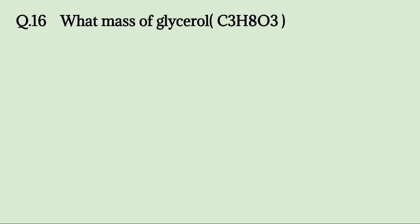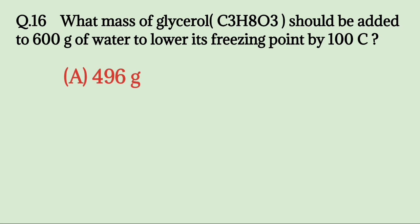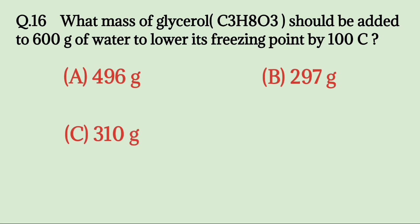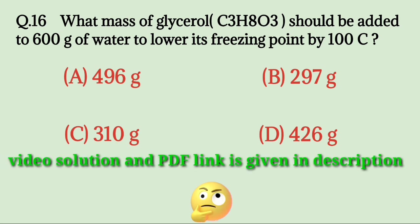What mass of glycerol should be added to 600g of water to lower its freezing point by 10°C? A. 496g, B. 297g, C. 310g, D. 426g. Try to solve it. The answer is 297g.